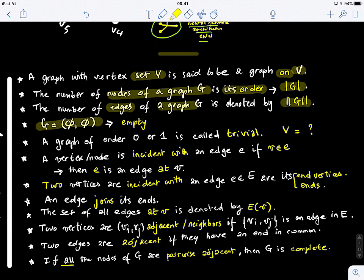A graph of order zero or one is called a trivial graph. Of order zero, the order is the number of nodes. If it has order zero, it means no nodes. We have zero nodes. So the graph is empty. If we have order one, it means the graph has one node. The number of nodes in the graph is equal to one. These both cases are called trivial graphs.